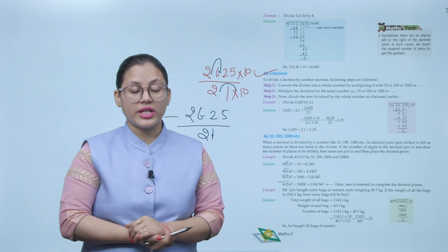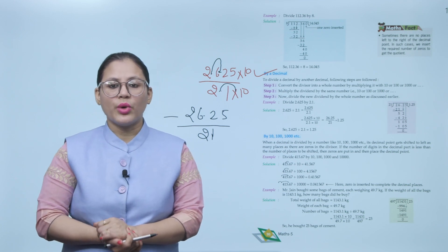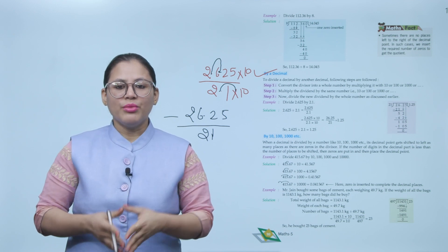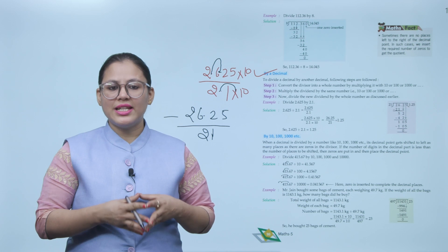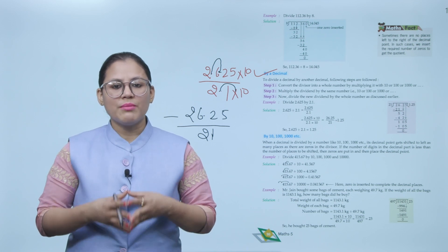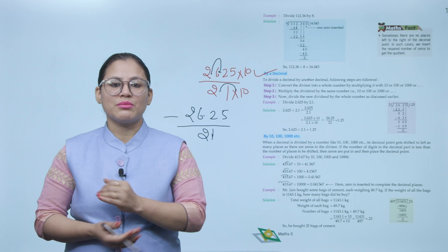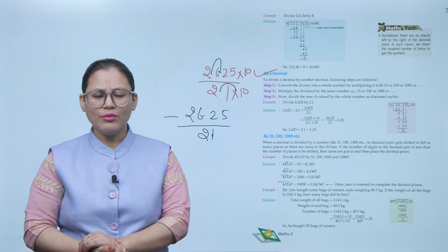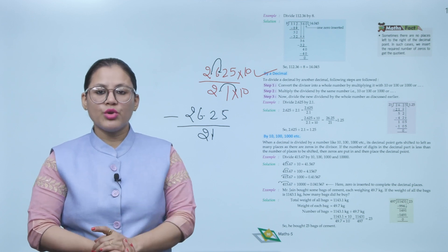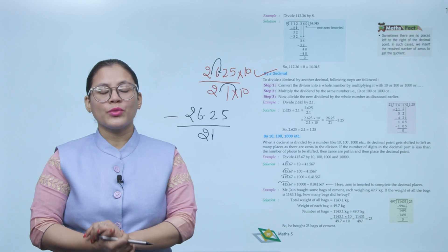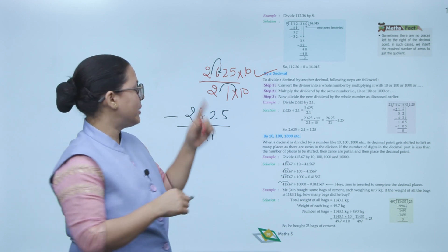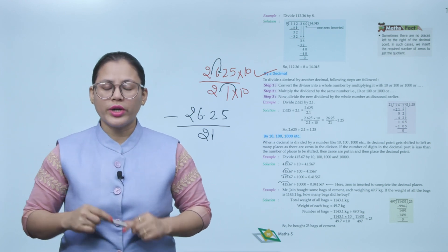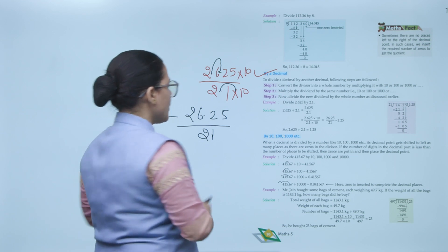When dividing by 10, 100, 1000, etc.: when a decimal is divided by 10, 100, or 1000, its decimal point shifts to the left by as many places as there are zeros in the divisor. If the number of digits in the decimal part is less than the number of places to be shifted, zeros are added and then the decimal point is placed. In multiplication the decimal shifted right; in division it shifts left.